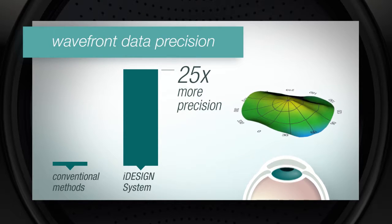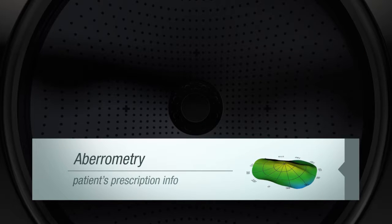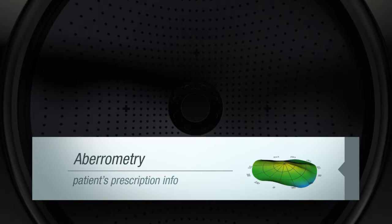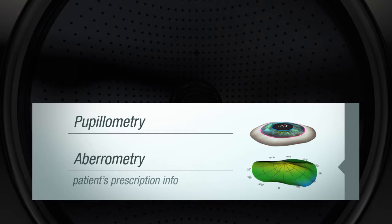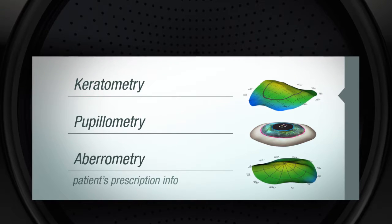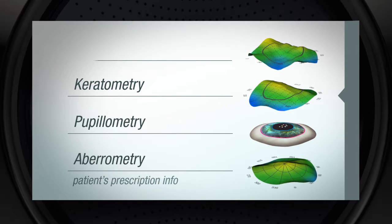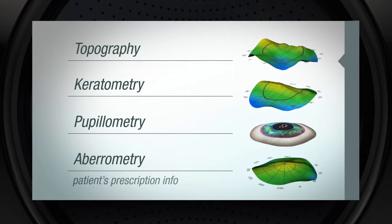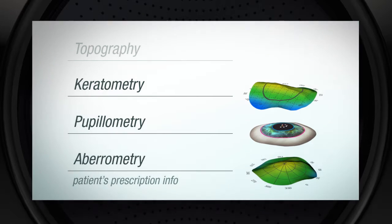In addition to determining a patient's prescription information, the iDesign system measures pupil size in different lighting conditions, curvature of the cornea called keratometry, and the overall topography or shape of the front of the eye. All of these measurements are mapped by the iDesign system in mere seconds and in a single sitting.